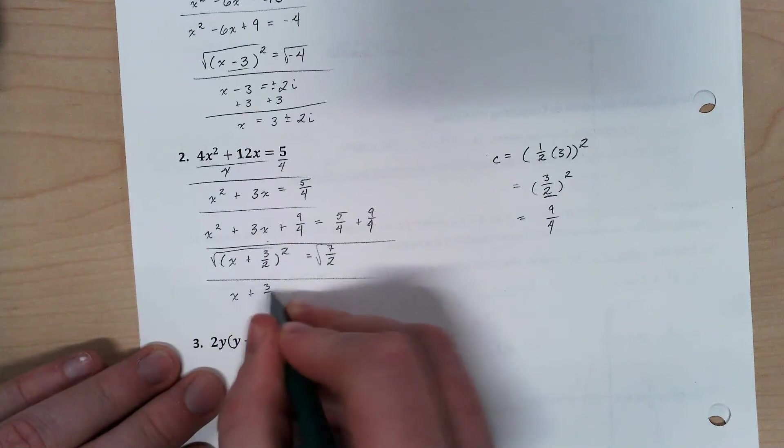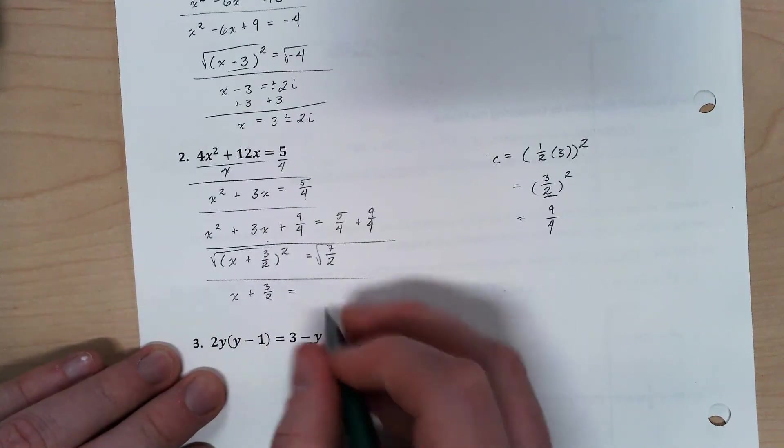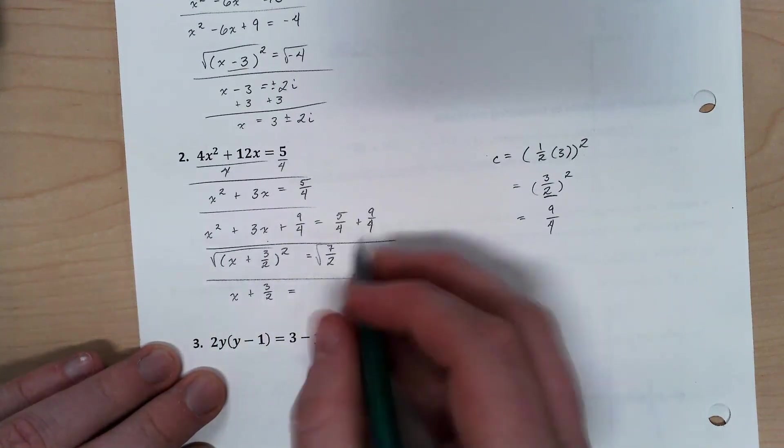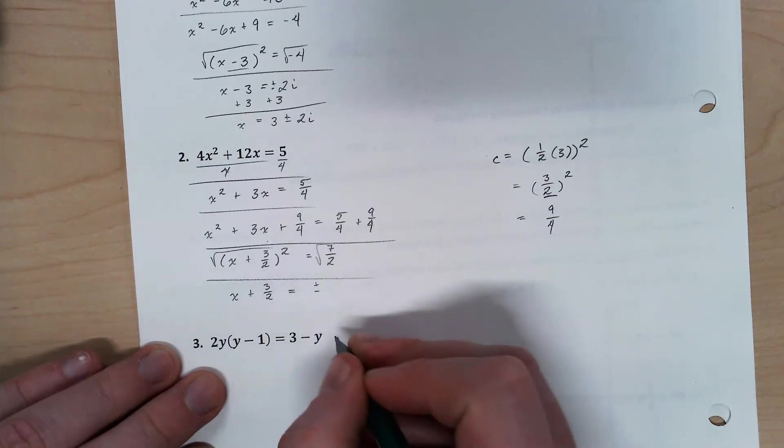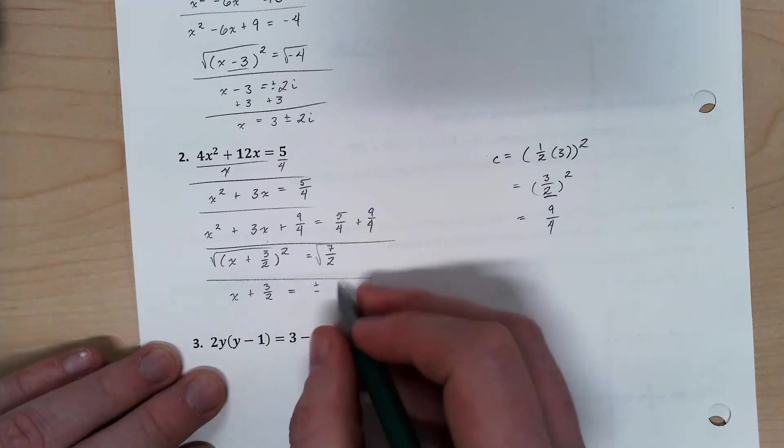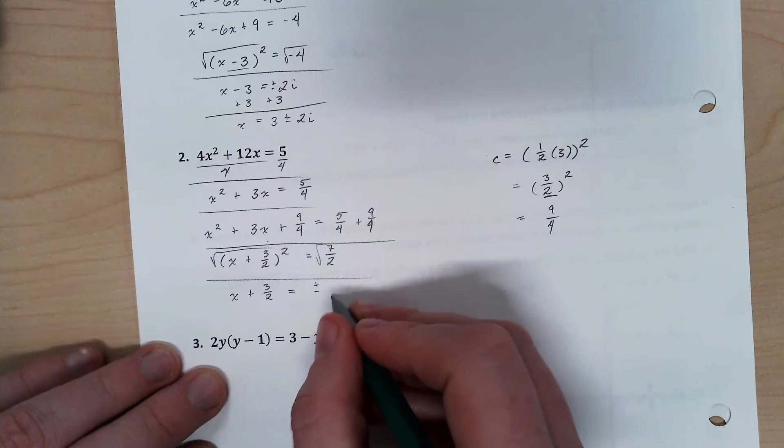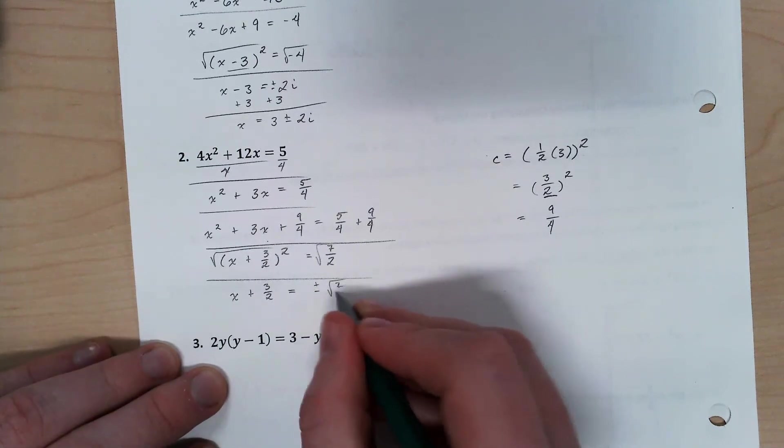So x plus 3 over 2 is equal to plus or minus, well, it's root 7 over 2. So let's leave that as it is now and we'll simplify it at the end.